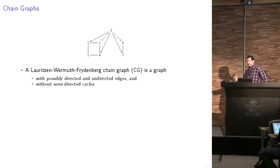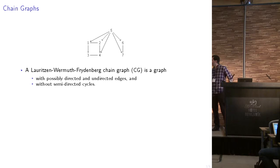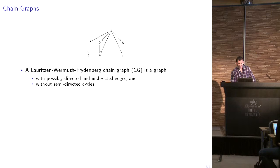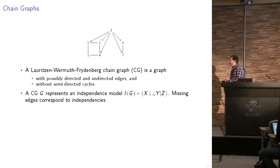So what is a chain graph? It's a graph that contains directed and undirected edges and doesn't contain any semi-directed cycle. A semi-directed cycle is a path from a node to itself that contains at least one directed edge, and all the directed edges in the path should be in the same direction. So this one here is not a semi-directed cycle.